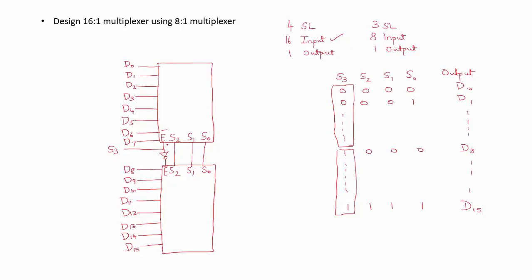If S3 is 0, the active-low enable connects S3 directly and through a NOT gate to the second multiplexer, so this MUX is enabled and you get the first 8 values depending on S2, S1, and S0. If S3 is 1, the first MUX is disabled and the second MUX is enabled, so you can select anywhere from d8 to d15 based on S2, S1, and S0. The output from both multiplexers is given to an OR gate which gives the final output.